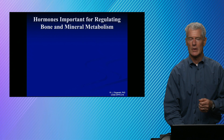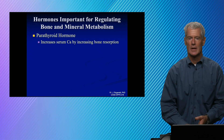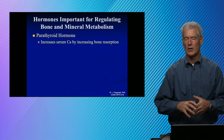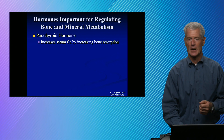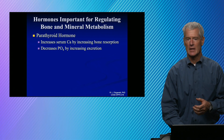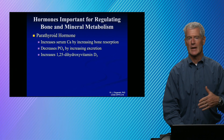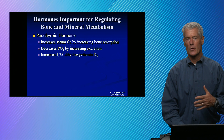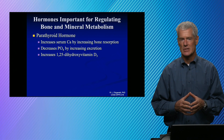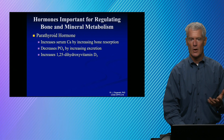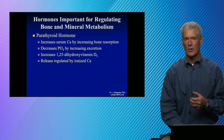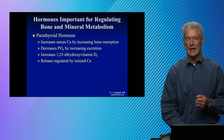Parathyroid hormone — how does it work? It primarily acts on the bone. It's going to increase osteoclast activity so that you break down bone and release its calcium contents into circulation. It decreases phosphate concentrations by increasing phosphate excretion, which is sort of the opposite of what 1,25-dihydroxyvitamin D3 does. PTH also increases the rate of hydroxylation of 25-hydroxyvitamin D to its active form, 1,25-dihydroxyvitamin D. On the parathyroid, you have calcium sensors, and they are regulated by ionized calcium.